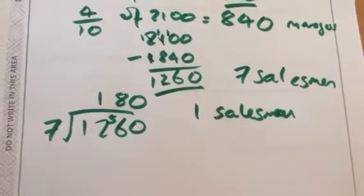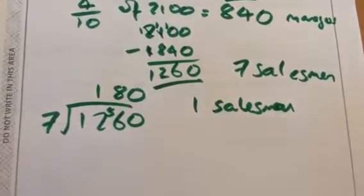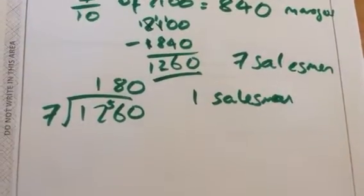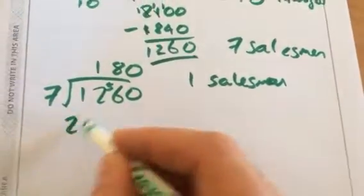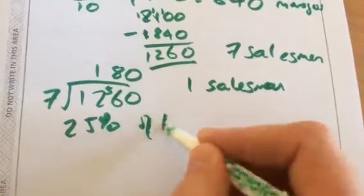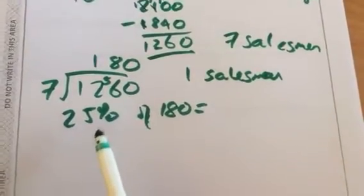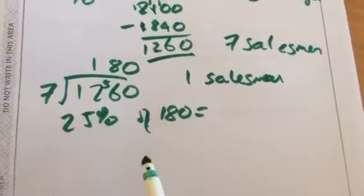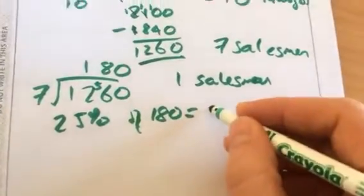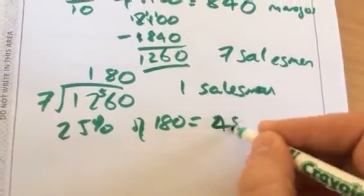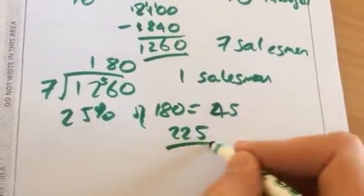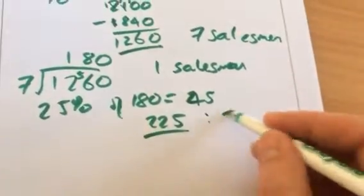So then all we have to do is compare that. Then if we increase that by 25%, we can compare. So 25% of 180 is 225. Because half of 180 is 90, half of that again is 45. So you add 45, you get 225. And we can compare that to the 210 at the beginning.